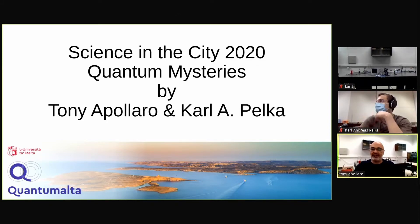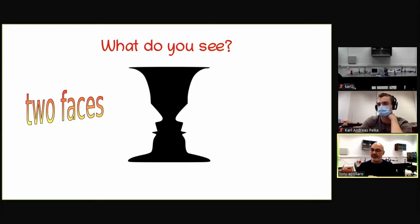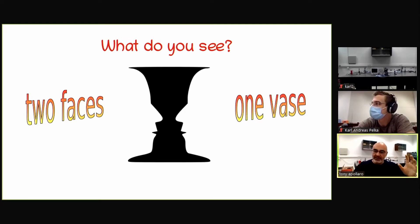We start with an image. We ask now our spectators, the people at home, what do they see here in this image? Do they see two faces? Or do they see one vase? So the point is here, you can see either two faces or one vase, depending on what you keep as foreground and background.